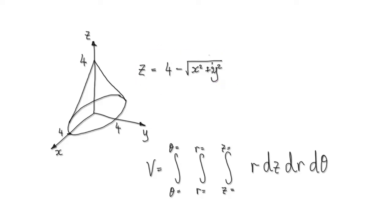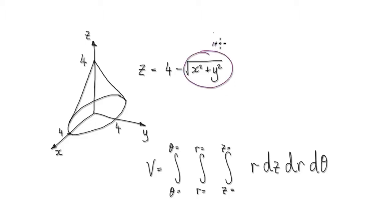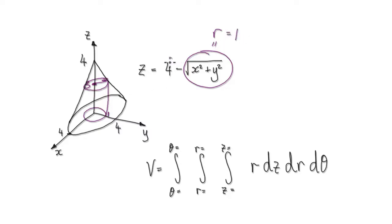So in cylindrical form, you can think of this as being your radius r. Let's just imagine the cone — the z elevation is at 3. So the base of the cone will have a radius of 1, because down here, x squared plus y squared square root will be 1. So when the radius is 1, you can see 4 take away 1 will give you an elevation or height of 3.